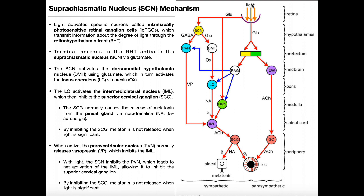Light is going to strike the retina, and within the retina there are specific cells that are different from the normal photoreceptors or ganglion cells that you've normally talked about in an anatomy course. They're called intrinsically photosensitive retinal ganglion cells — we'll just call them IPRGCs. These are ganglion cells in the retina of the eye that are really just sensitive to light.